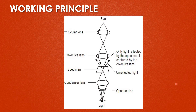This is the working principle of the dark field microscope. The opaque disc blocks the light coming from the light source, preventing it from entering the objective lens directly. Only light that is reflected off the specimen enters the objective lens, and it reaches the eyes through the ocular lens or eyepiece. Because there is no direct background light, the specimen appears bright against a black background — this is why it is called the dark field.